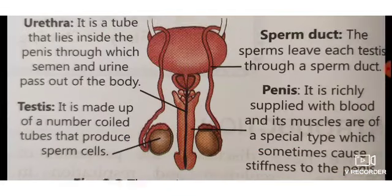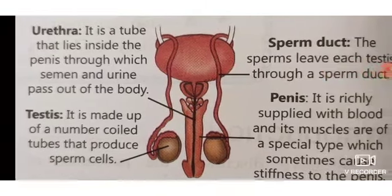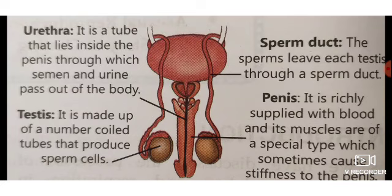There is also a urethra: it is a tube that lies inside the penis, through which both semen and urine pass out of the body. The urethra originates from the testes region. In the longitudinal section, you can see the urethra as the tube inside the penis through which urine and semen are passed out.